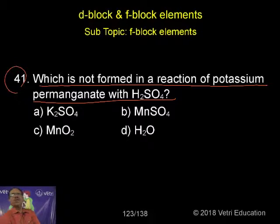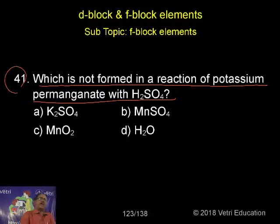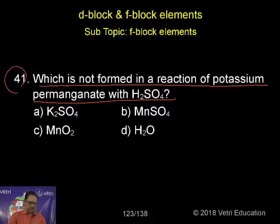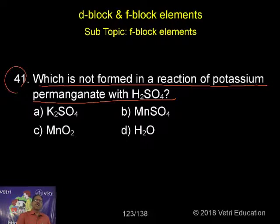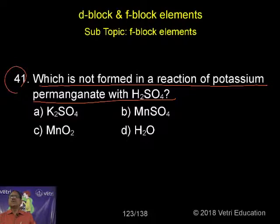My dear students, when we are doing the titrations at higher secondary level — acidimetry, alkalimetry, and permanganometry — under permanganometry, you are doing two things. One is taking potassium permanganate in the burette, and in the conical flask you are taking Mohr's salt or ferrous sulfate, or crystalline oxalic acid. In the case of Mohr's salt you directly titrate, whereas for crystalline oxalic acid you heat it to 60 to 80 degrees in acid media.